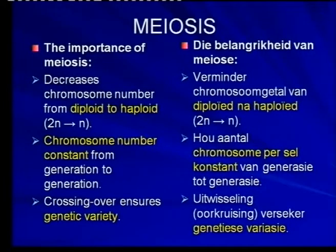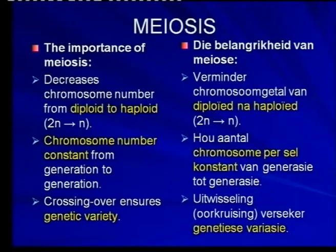Just to go back to the chromosome number that remains constant — I hope you understand why that is important. Can you imagine if meiosis should not take place, what would happen to the chromosome number from one generation to another? That is why it's so important — otherwise there would not have been the existence of certain species; in fact, of no species.